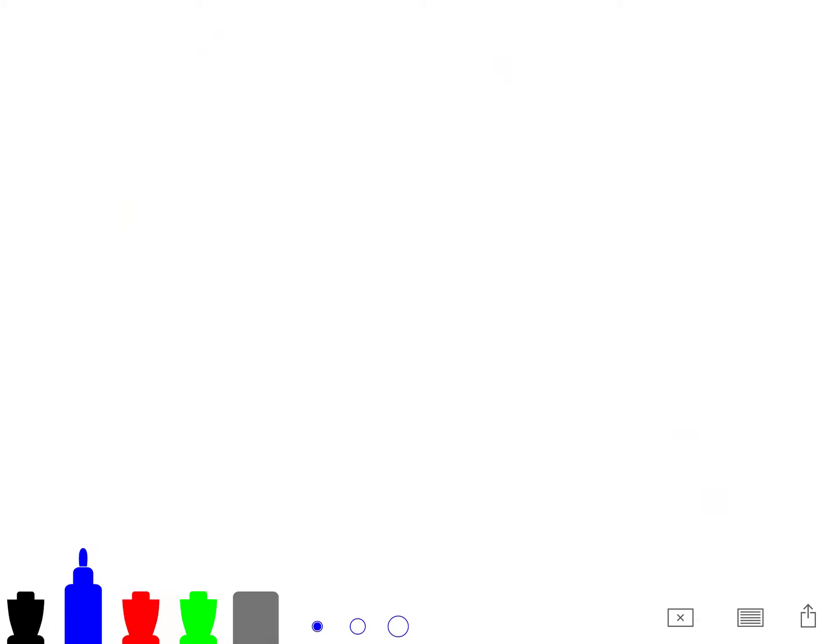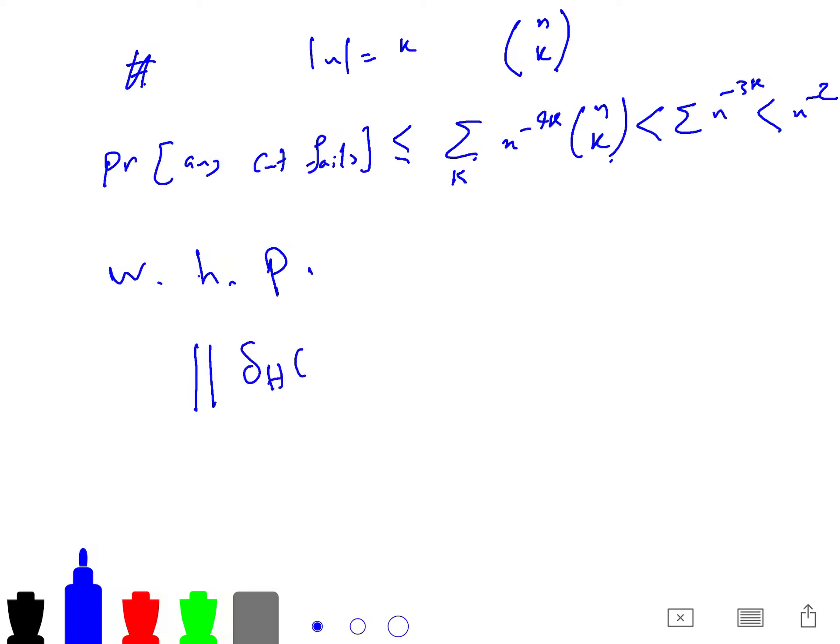So the number of cuts with U equal to K is N choose K. We have N vertices. We can choose K different cuts. So this is the answer. And so the probability that any cuts fails, not just one of them, any cuts. We can use the union bounds in probability theory. And then we just sum over all of them, which is bounded by N to the minus 3 K. And from here is just simple math. So with high probability, every U has delta H of U minus P delta U less than P delta.